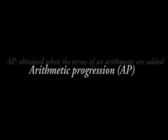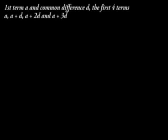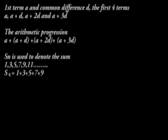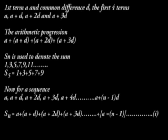An arithmetic progression is obtained when the terms of an arithmetic sequence are added. For an arithmetic sequence, the first term A and common difference D, the first four terms are A, A plus D, A plus 2D, and A plus 3D respectively. The arithmetic progression will be A plus A plus D plus A plus 2D plus A plus 3D. Sn is used to denote the sum of the first N terms. For a sequence 1, 3, 5, 7, 11, S5 is the sum of the first five terms, that is, 1 plus 3 plus 5 plus 7 plus 9. For a sequence A, A plus D, A plus 2D, up to A plus N minus 1 times D, Sn will be given by A plus A plus D plus A plus 2D up to plus A plus N minus 1 times D.